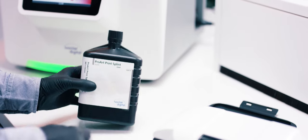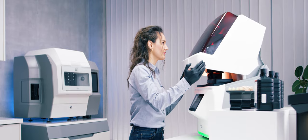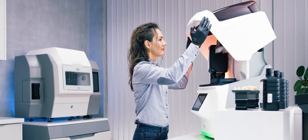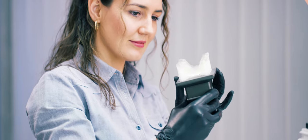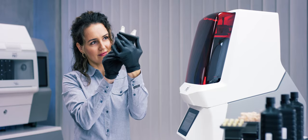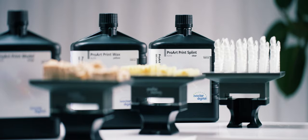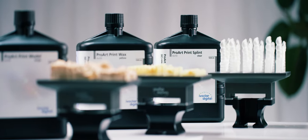ProArt Print Splint is a transparent, strong, light curing resin for 3D printing and is suitable for the production of almost invisible occlusal splints. ProArt Print Splint offers high strength without brittleness and has a low risk of fracture.